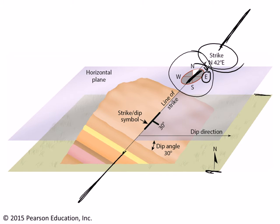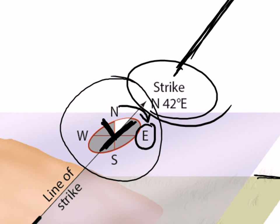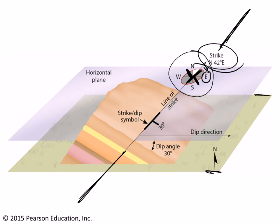Now, that given strike could have two different dips. The dip is always 90 degrees to the strike, but it's basically a question of whether it is dipping toward the northwest or toward the southeast. So the dip could be coming off the strike in one direction or the other. In this case, you can see that the dip is coming off to the right side of the strike — toward the southeast.